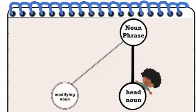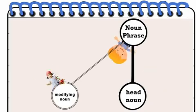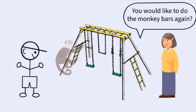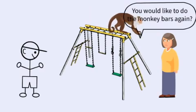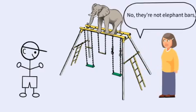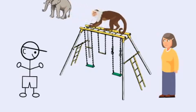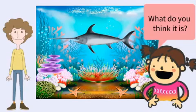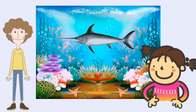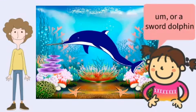Three-year-old children can use this pattern creatively, often in a humorous way. 'Do you want to do the monkey bars again?' 'How about elephant bars?' 'No, they're not elephant bars. They're called monkey bars.' 'What do you think it is?' 'Maybe it's a swordfish.' 'What do you think?' 'Or a sword dolphin.'